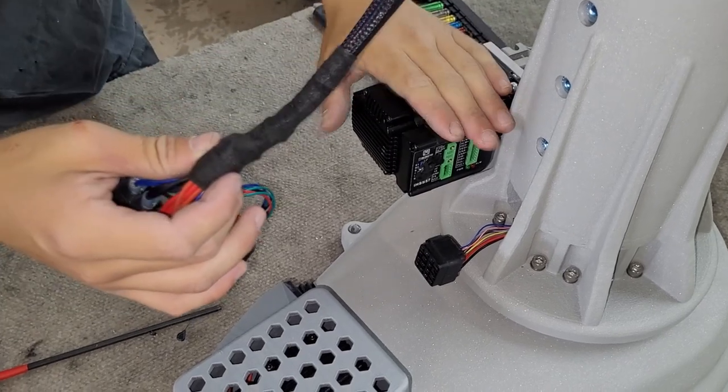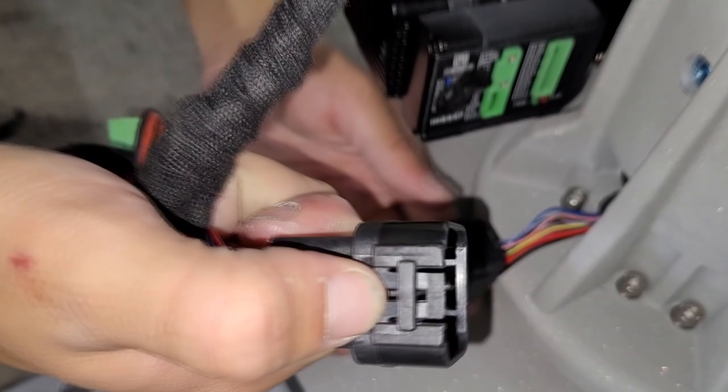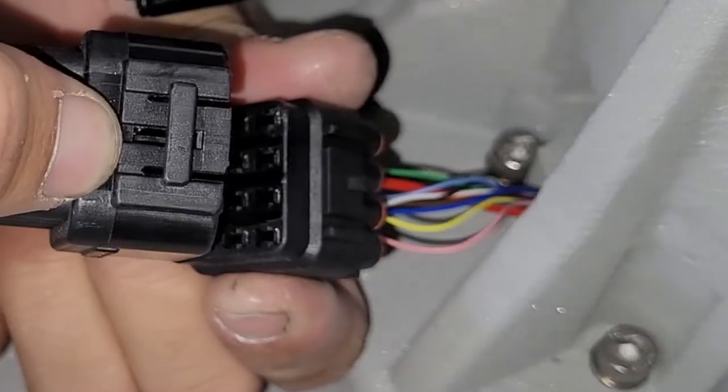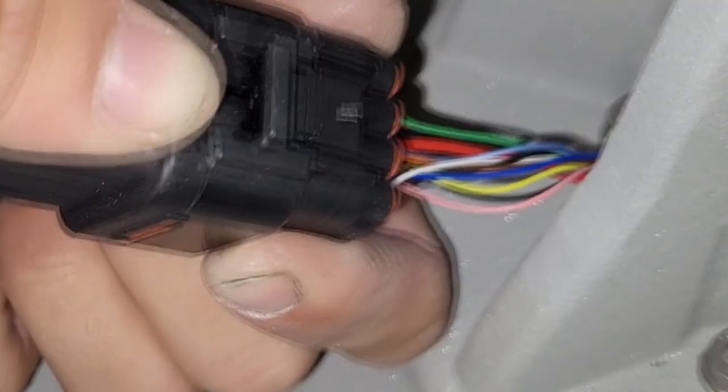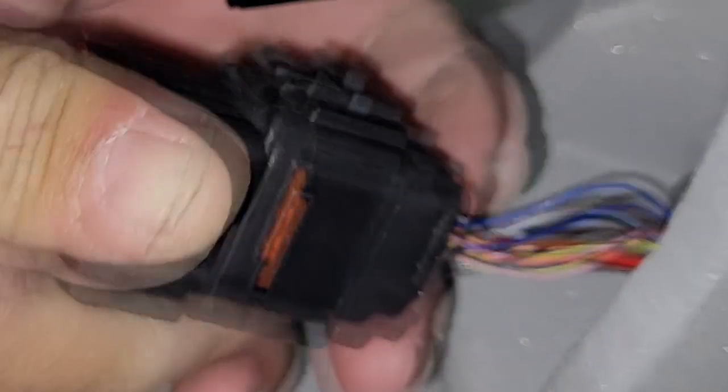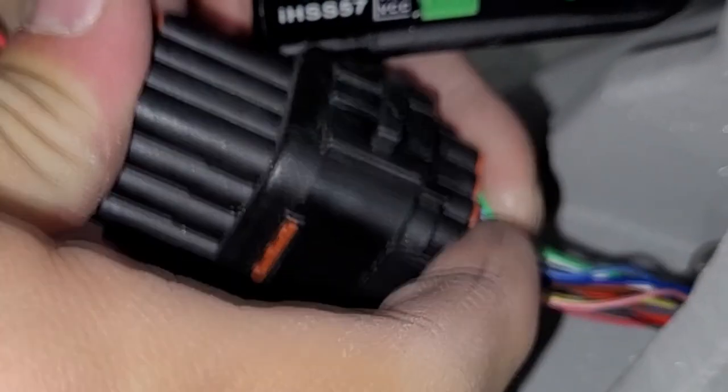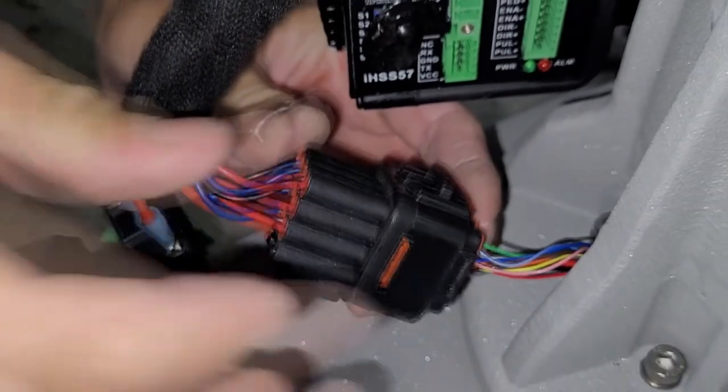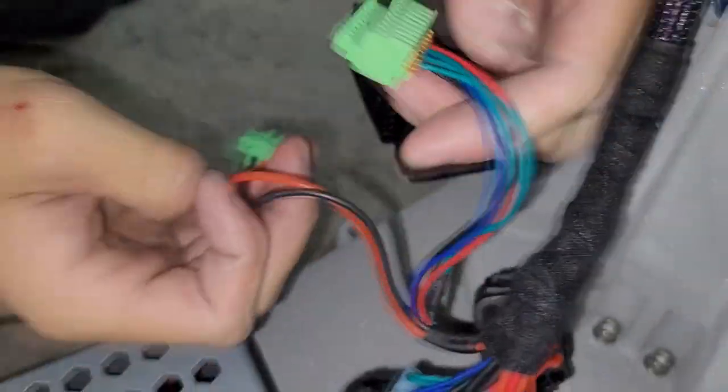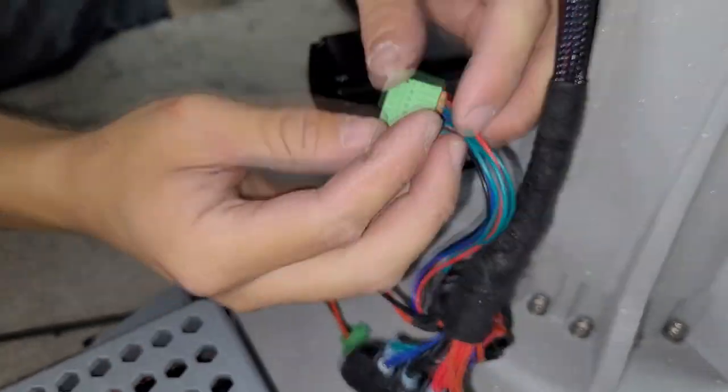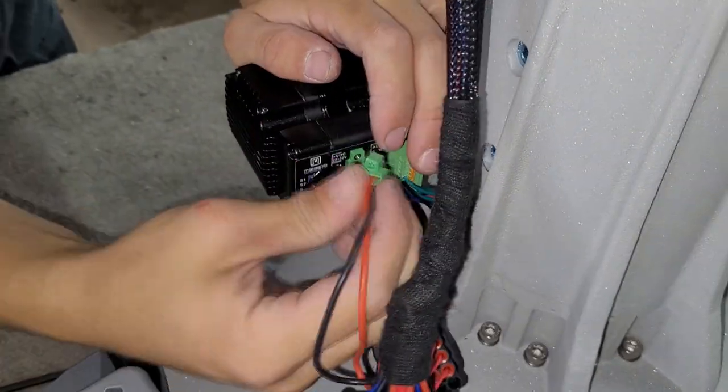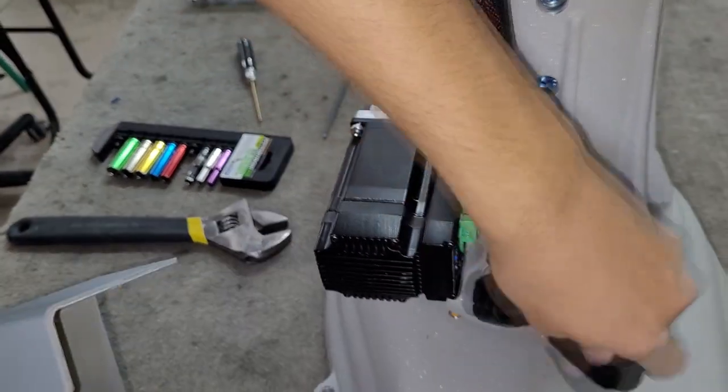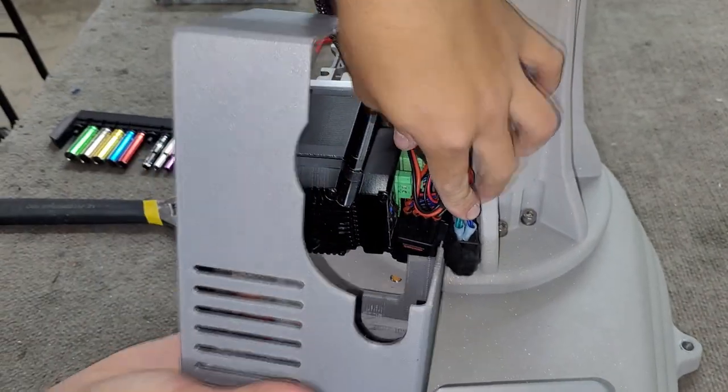The main wire harness can now be connected. Make sure that the tabs line up with each other. It should be fully inserted as shown here. Now we will plug in the wires into the Z-motor. Push the cables next to each other as shown here and then put on the motor cover.